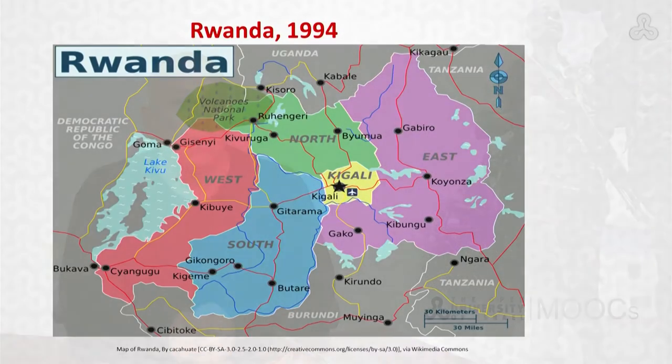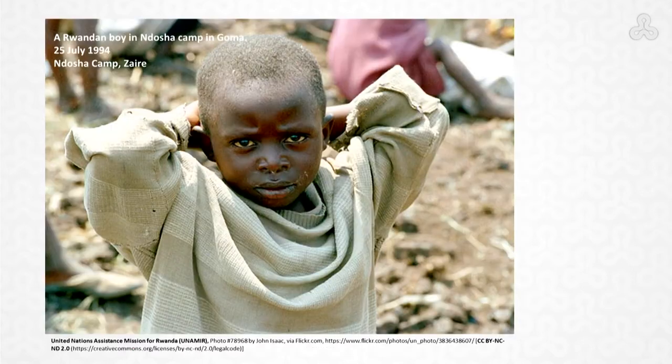Hello and welcome to the second lecture of the second week of classes in the Open University's MOOC on genocide. As you remember, this week we discussed the genocide in Rwanda in 1994. Today's lecture will focus on two key concepts directly related to our attempt to understand the background for the genocide in Rwanda.